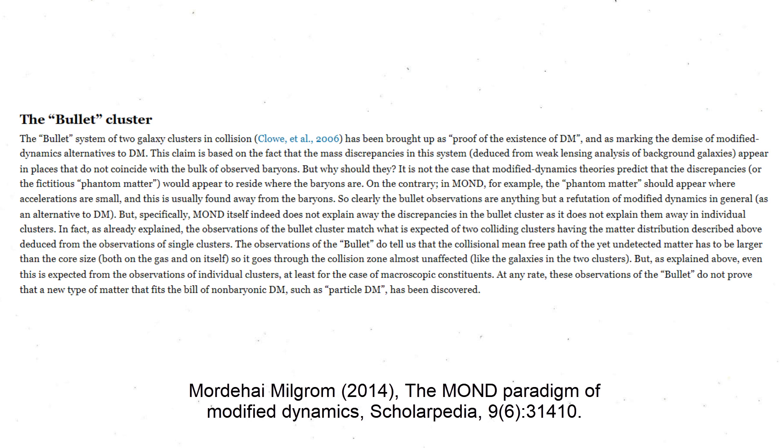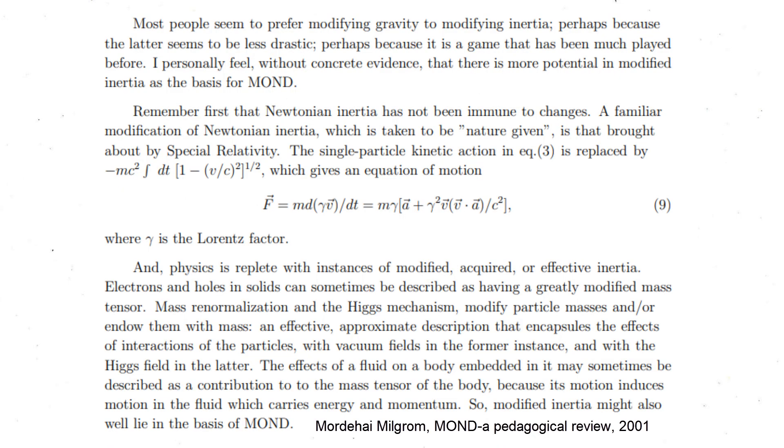Milgrom himself often supported the idea of MOND as modifying inertia instead of gravity. Although the latter might seem simpler or less of a sin to do, Newtonian inertia was already modified by special relativity, and there are many more examples in physics of modified, acquired, or effective inertia observations.